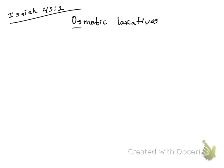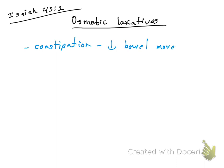Osmotic laxatives. First, why do we use osmotic laxatives? If the patient has constipation — constipation is when you decrease your bowel movement — the patient cannot go to the bathroom well. So decreased bowel movement means the patient has constipation.